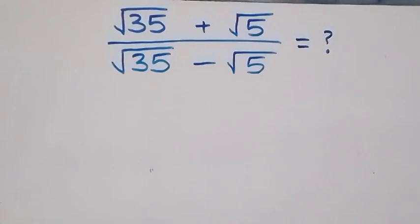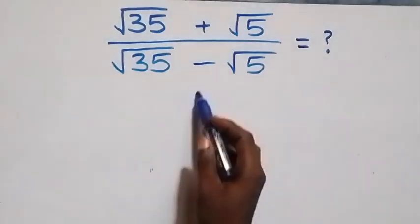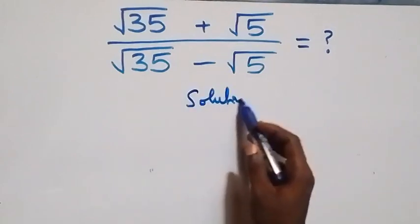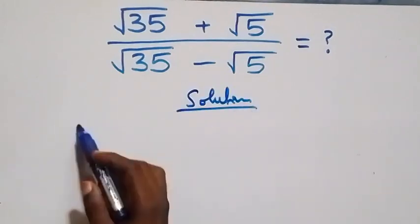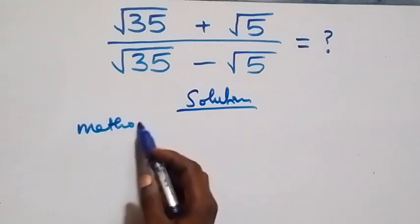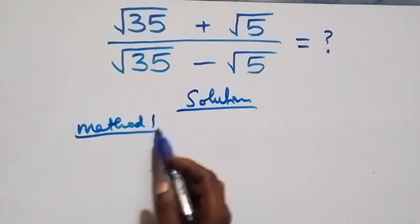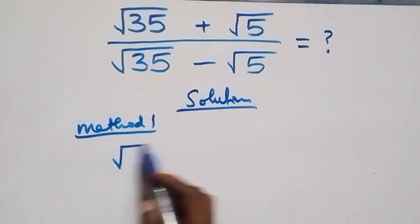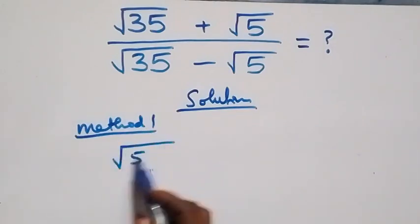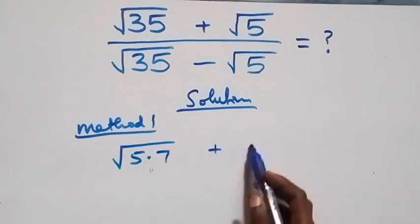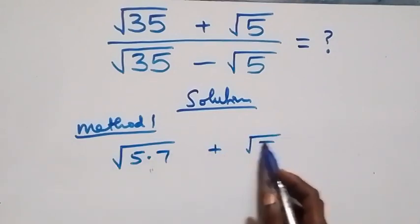Hello, you are welcome. How to solve this problem — the solution from what we have here. We use two methods. For the first method, we rewrite √35 as √(5×7), then plus √5 here.